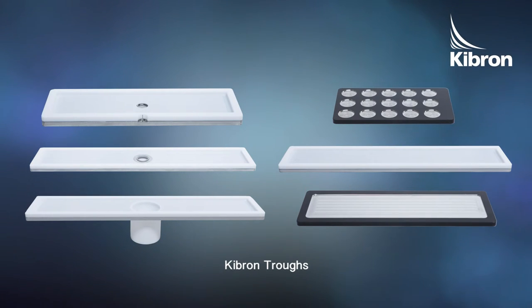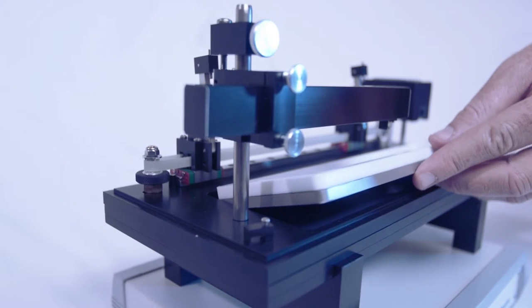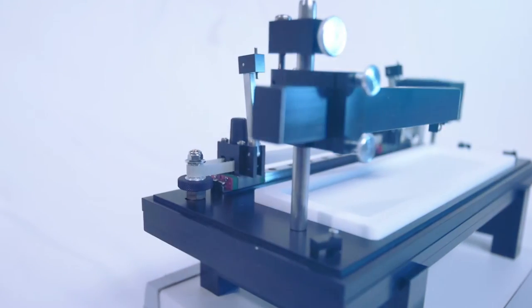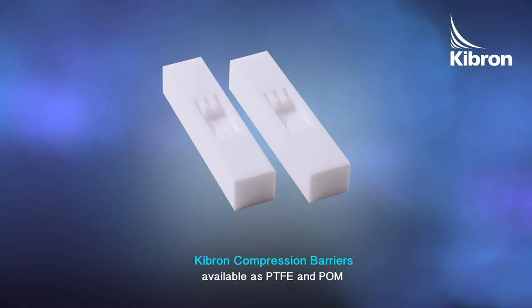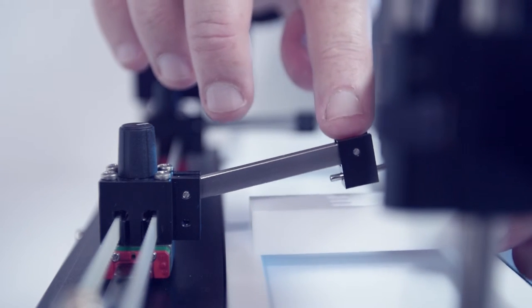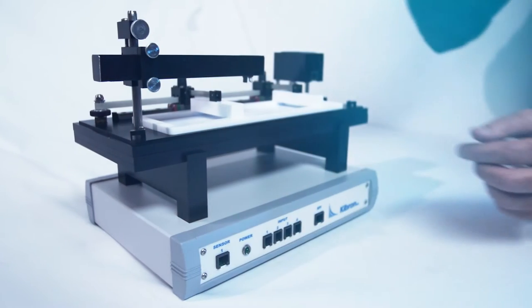Kibron troughs are available in a range of different materials to suit your experiments. The troughs are interchangeable for different substances and applications. The molecules in the film are confined on the sub-phase surface by the barriers and the trough edges. The surface area of the trough can be varied by moving the barriers.